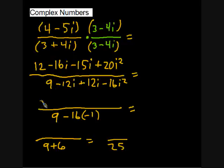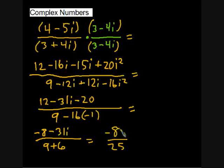Now, let's go ahead and clean up the top. 12 minus, this will be 31i. And then again, i squared is negative, so we'll make that minus 20. So that gets us negative 8, negative 20 plus 12, and then minus 31i.